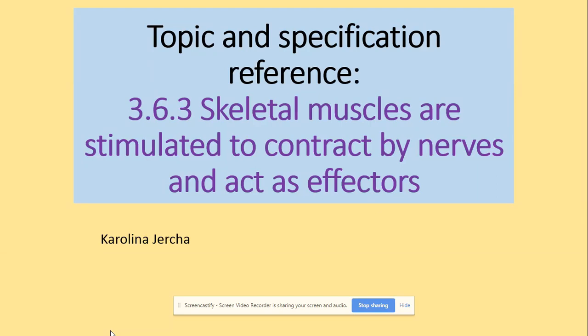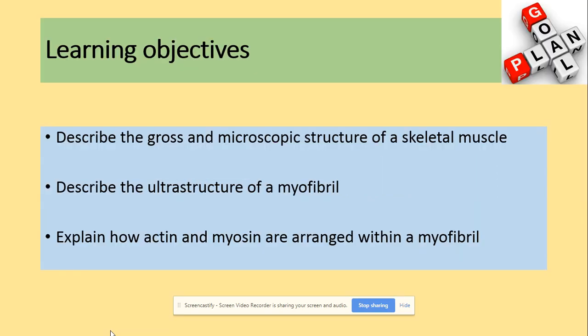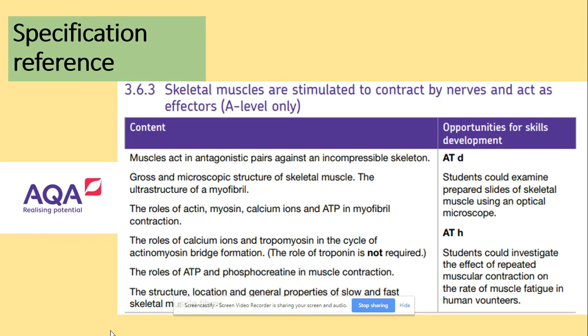Hi guys. Welcome to the structure of the skeletal muscle. You need to be able to describe the gross and microscopic structure of a skeletal muscle, describe the ultrastructure of the myofibril, and explain how actin and myosin are arranged within a myofibril. This is the specification we will be looking at, and in this video we are only looking at the structure of the skeletal muscle.